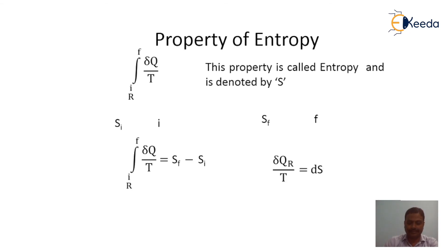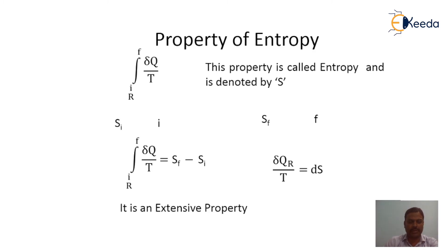For an infinitesimally small change in the state of a system, we have δQ/T = dS, where dS is the differential change in entropy of the system. This property, entropy, is an extensive property and has a unit of joules per kelvin. Specific entropy — entropy per unit mass — has a unit of joules per kilogram kelvin.